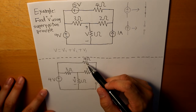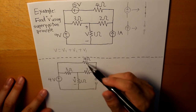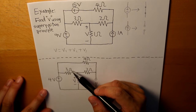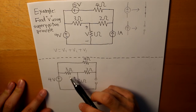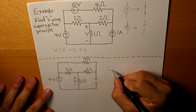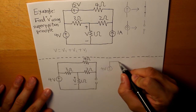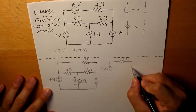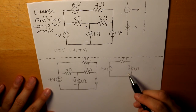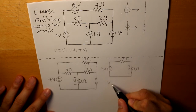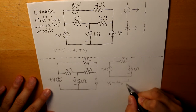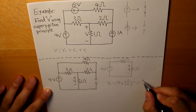We combine the 4-ohm and 2-ohm resistors to get 6 ohms, which is then in parallel with 3 ohms, giving us 2 ohms. Our simplified circuit has the 4-volt source, a 2-ohm resistor, and the 1-ohm resistor. Using voltage division, V1 equals 4 times 1 divided by (1 plus 2), giving V1 equals 4/3 volts.